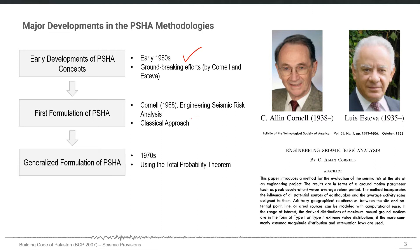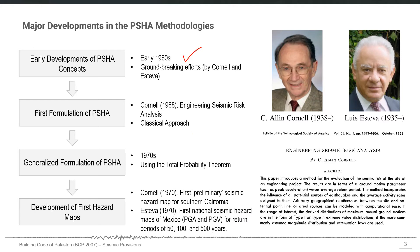This classical PSHA approach was later generalized in the 1970s using the total probability theorem. The first hazard maps were developed based on this generalized PSHA formulation. In 1960, Cornell developed the first preliminary seismic hazard map for southern California, and then in 1970, the first national seismic hazard maps of Mexico were developed using this approach.